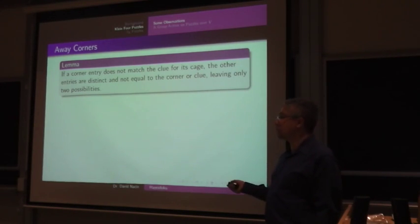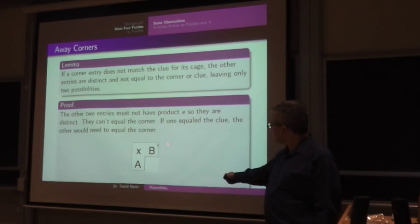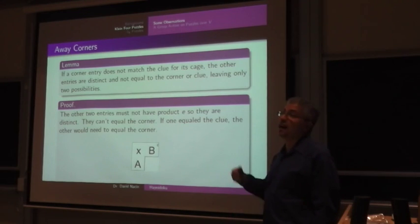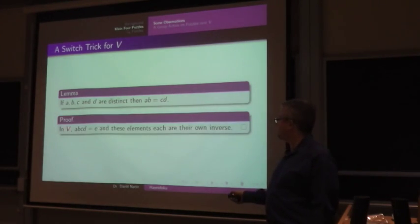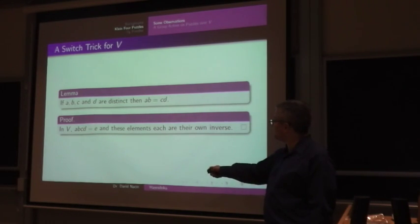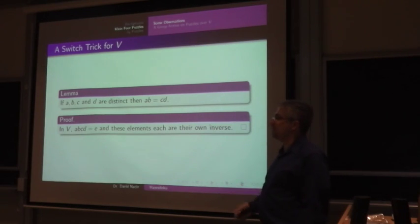For an away corner, we actually get a stricter lemma here. The other entries have to be distinct and not equal to either the corner or the clue. So all four elements of the group have to show up. And this is because let's look at this situation where x is not equal to C. Well, I know that neither of these can be x. And if one of these were C, then the other two would be forced to be the same because they would have the identity and that would violate the Latin square condition. So these can't be x, they can't be C, but they also can't be equal because that would force x to be equal to C. And the switch trick is even stronger over the Klein four group because I can switch any two elements with the other two. And that's because, well, the product of everything is the identity and each of these elements are their own inverse. So I can just multiply this by CD to get that. So I can switch any two entries with two different entries.